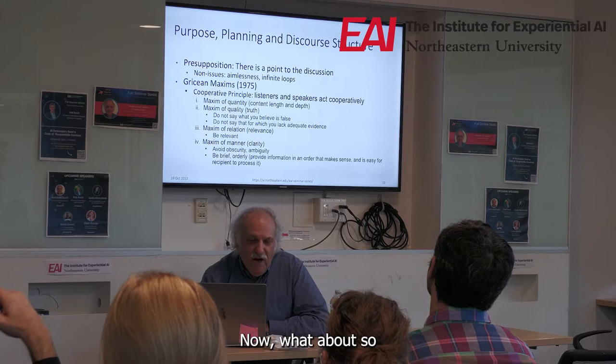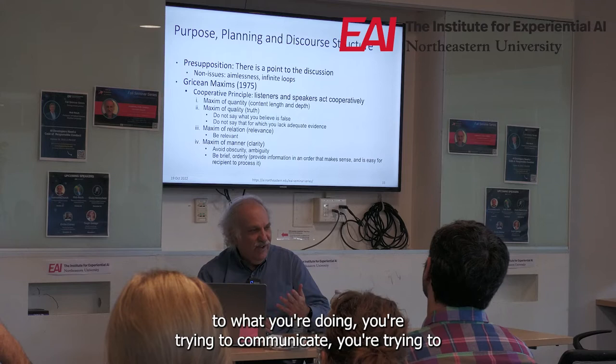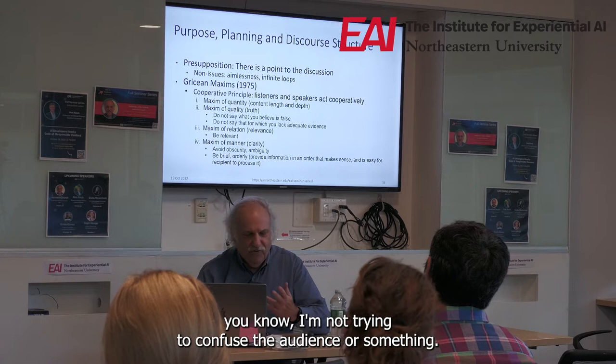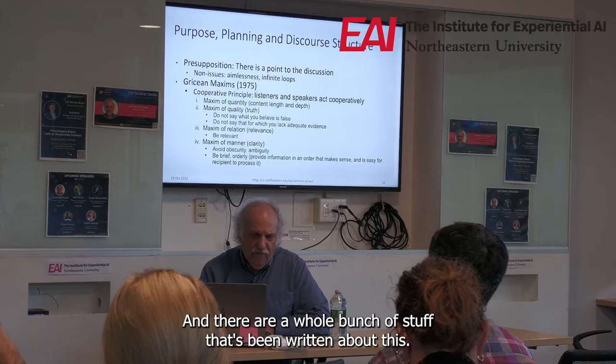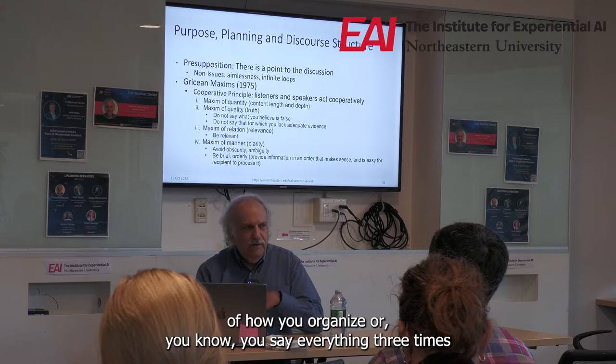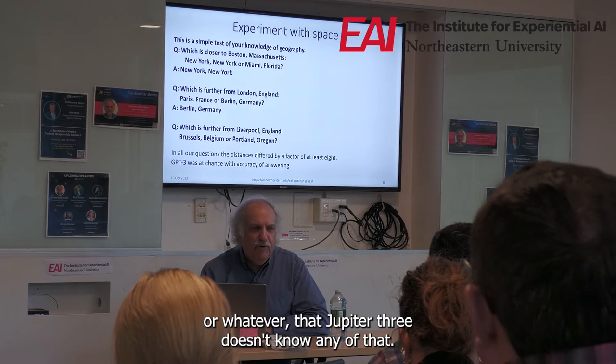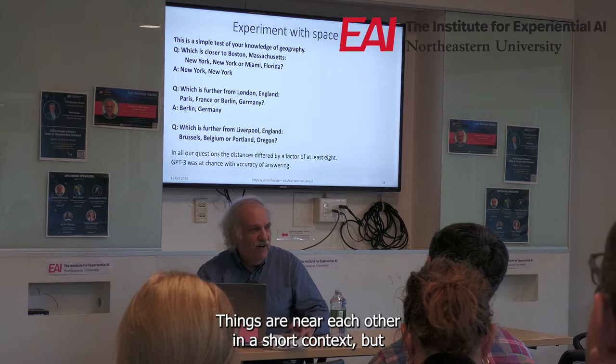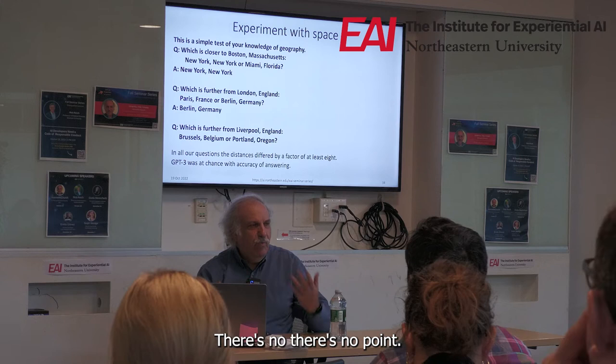Grace had all this stuff about purpose in communication — you're trying to communicate, trying to make your point. There's a whole bunch of stuff written about narrative, how you organize it. GPT-3 doesn't know any of that. It's very good at collocations — things that appear near each other in a short context — but it's sort of wandering around in circles. There's no point, no beginning, no end. Ernie came up with ways to test its sense of space, and it's pretty close to chance on those questions.